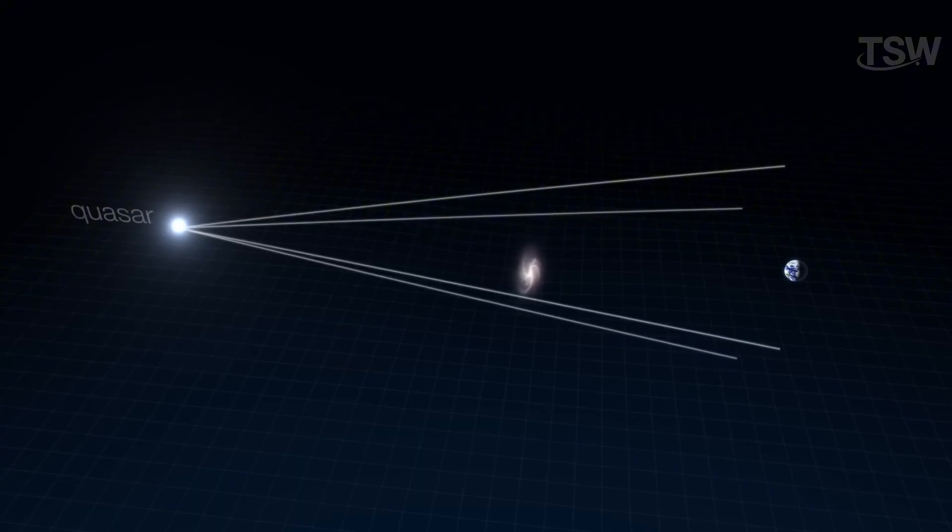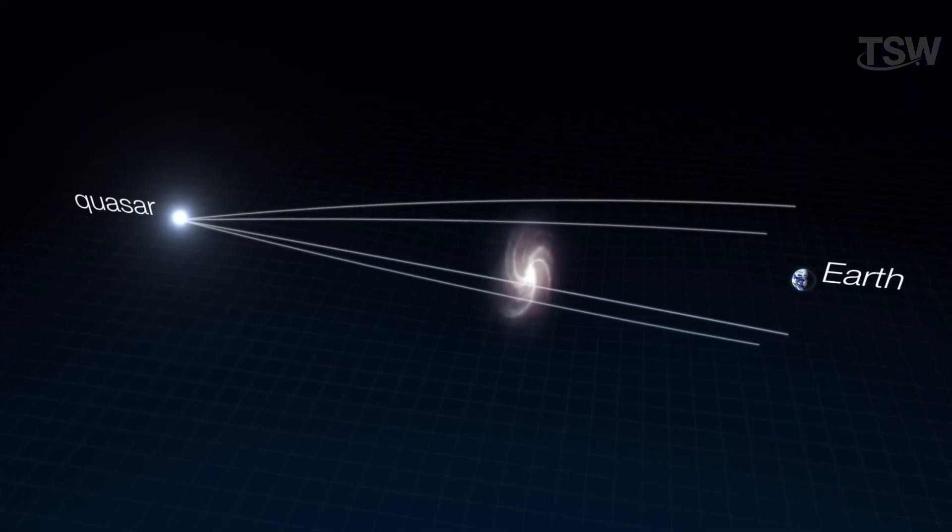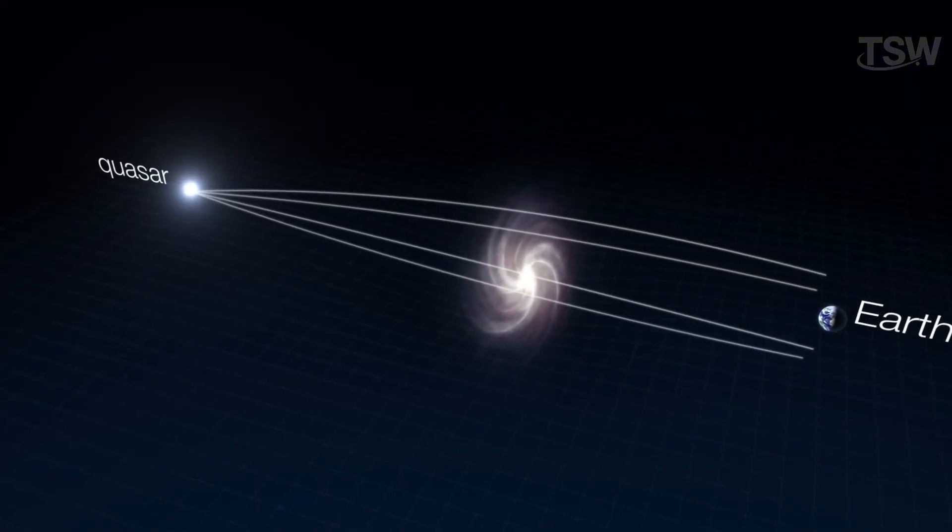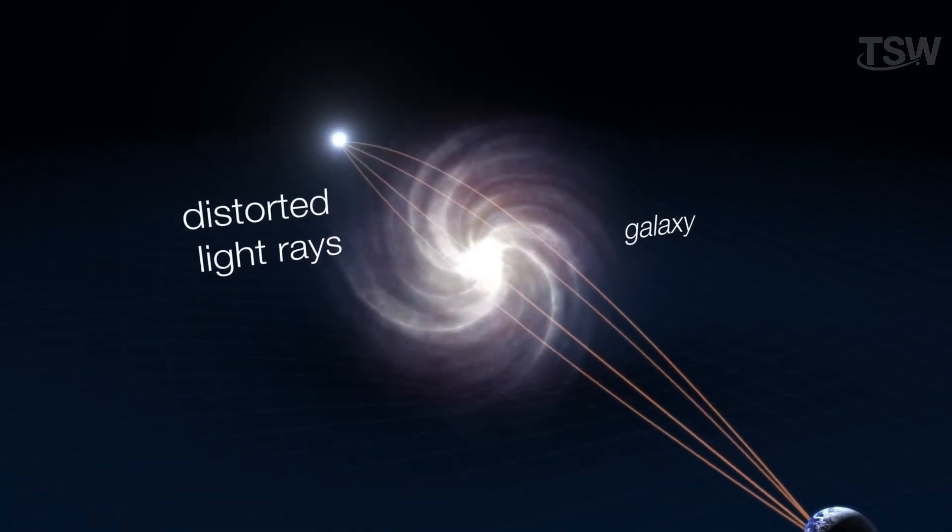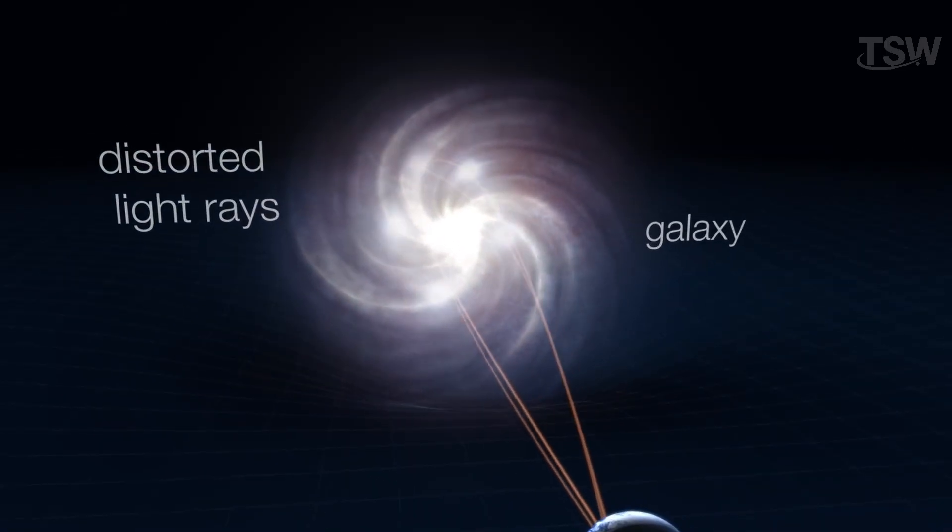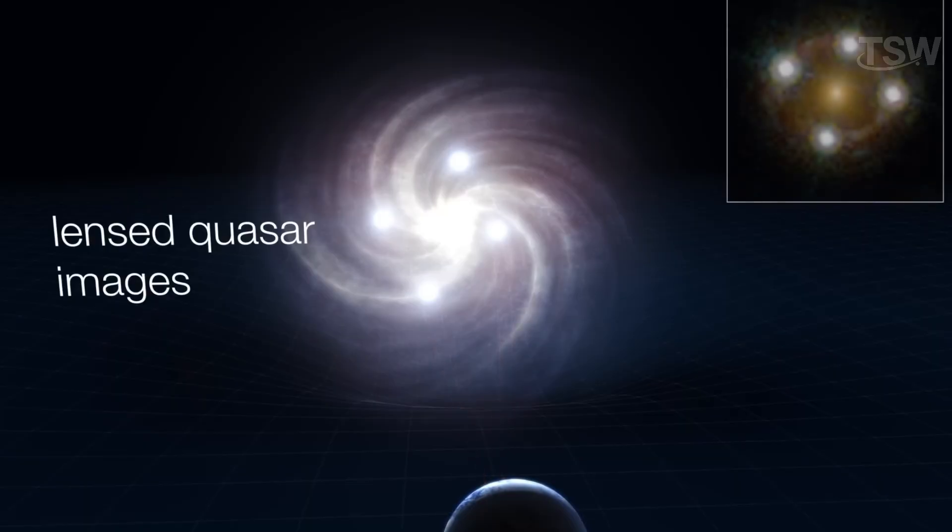Gravitational lenses are a true spectacle of physics. They occur when an extremely massive object, like a galaxy or a cluster of galaxies, bends the spacetime around it so intensely that the light from even more distant objects is redirected.